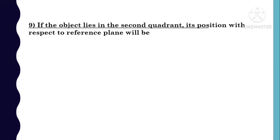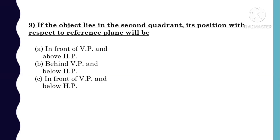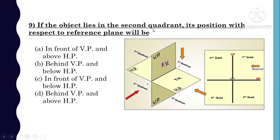MCQ 9: If the object lies in the second quadrant, its position with respect to the reference planes will be — options: A) in front of VP and above HP, B) behind VP and below HP, C) in front of VP and below HP, D) behind VP and above HP. In the second quadrant, the object is behind VP and above the horizontal plane. So option D, behind VP and above HP, is correct.